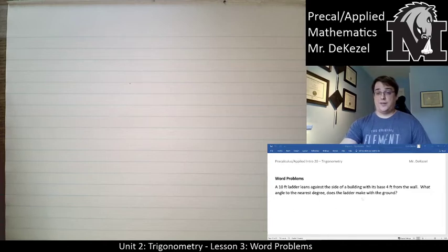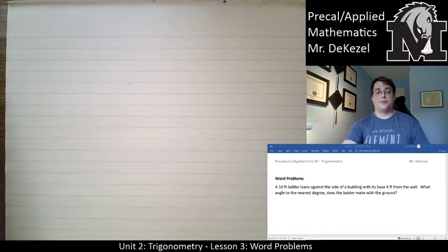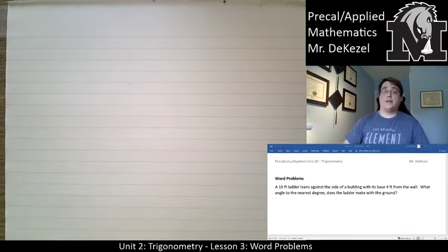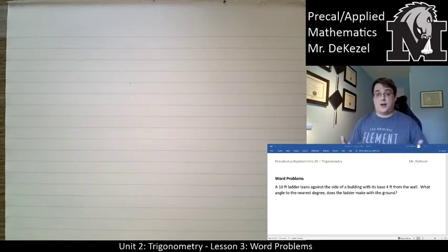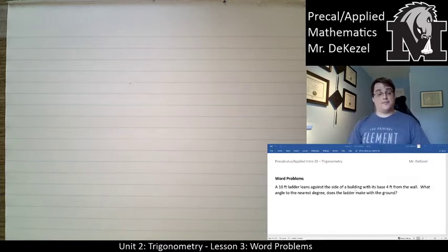Hello everyone, welcome back to another lecture. This is lesson three of the trigonometry unit on word problems. The process is: take the words, draw the picture, label the sides and angles as necessary, and then solve the problem using SOH-CAH-TOA — sine, cosine, and tangent.